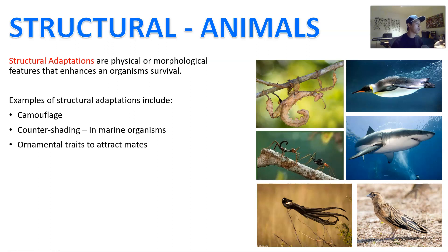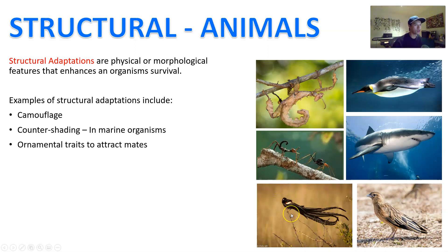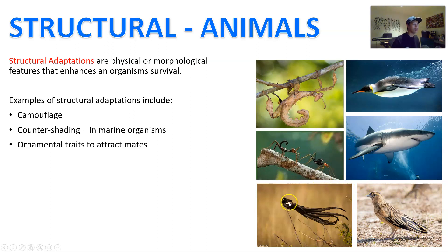Other examples of structural adaptation include ornamental traits that attract mates. This is the long-tailed widow bird — that's the male, with a very inconveniently long tail. In fact, it's actually bad for the survival of the bird because it's hard to fly with such a long and heavy tail. The purpose is just to attract a mate. The female looks very dull and boring compared to the colorful, vibrant male.